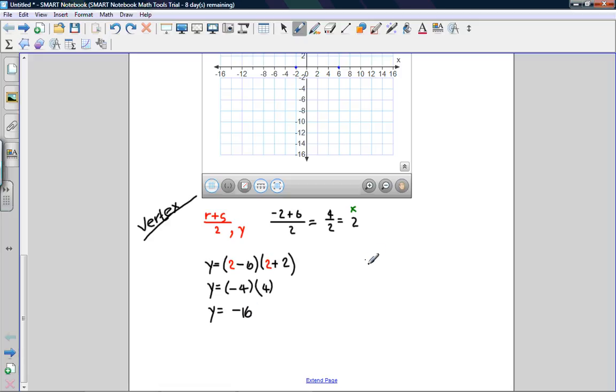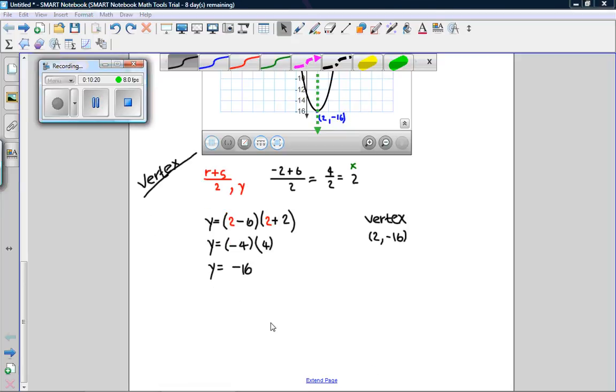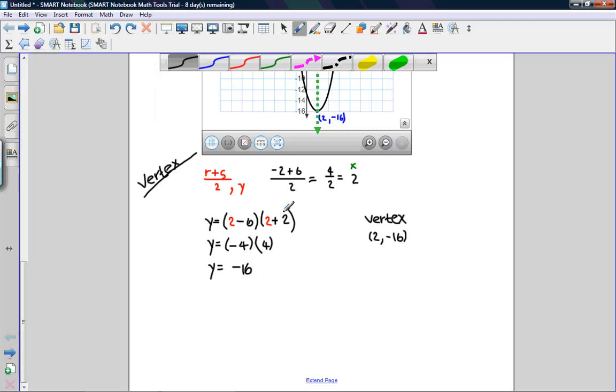So our vertex coordinate is (2, -16). To find the axis of symmetry, it's fairly simple. The vertex coordinate is on the axis of symmetry, so the axis of symmetry equation is x equals 2.